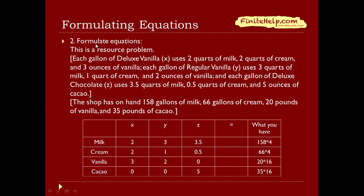Now we can formulate the equations. This is a resource problem, so each resource gets its own equation. Here we have milk, cream, vanilla, and cocoa on the rows, and x, y, z on the top, and that's going to equal what you have on hand.